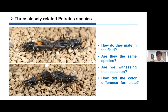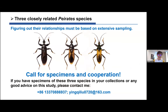They could even produce fertile offspring. We are raising the third generation in the lab, and their offspring also show all three different color patterns. This raises several questions: How do they mate in the field? Are they the same species since they can interbreed and produce fertile offspring? Are we witnessing speciation? And if they are the same species, how did the color differences originate? This will be a research topic for a new student in our lab, and I will also take part in these studies. We call for specimens and cooperation — if you have specimens of these three species in your collections, please contact us.